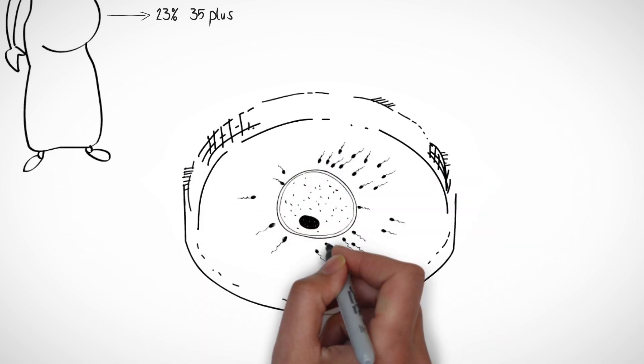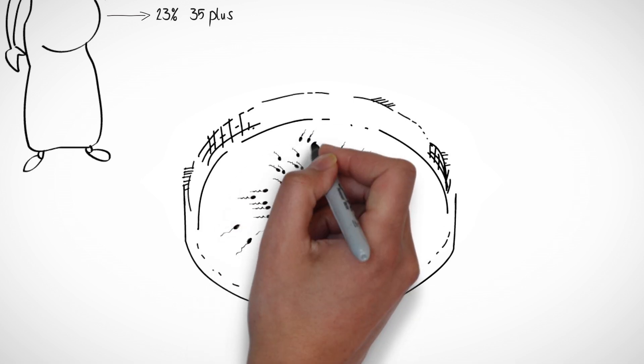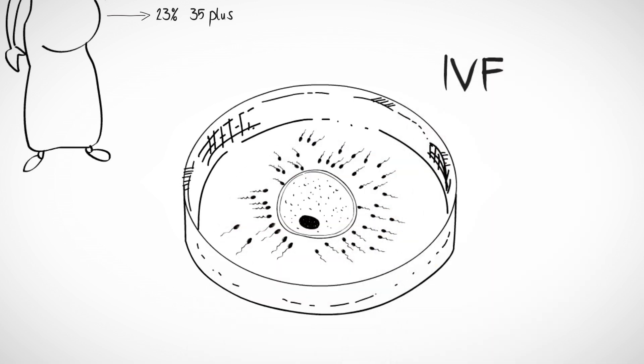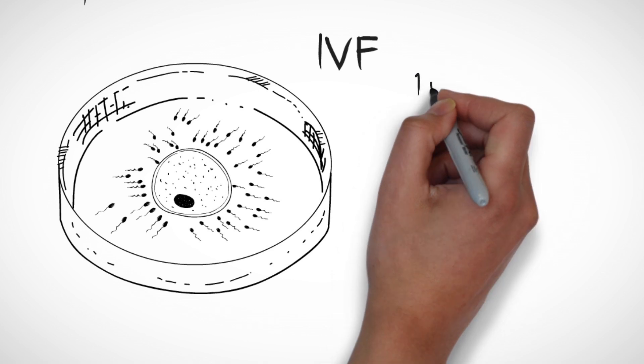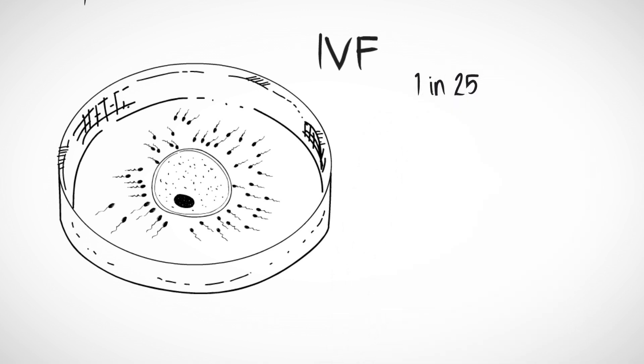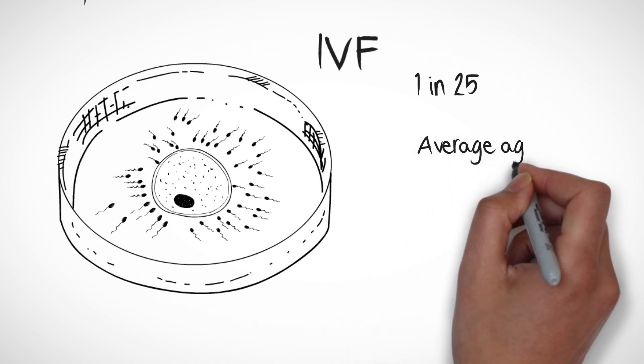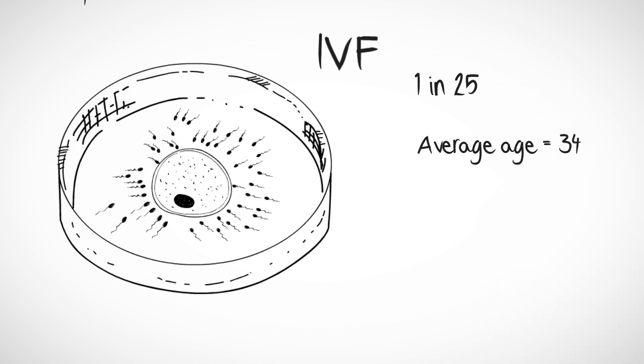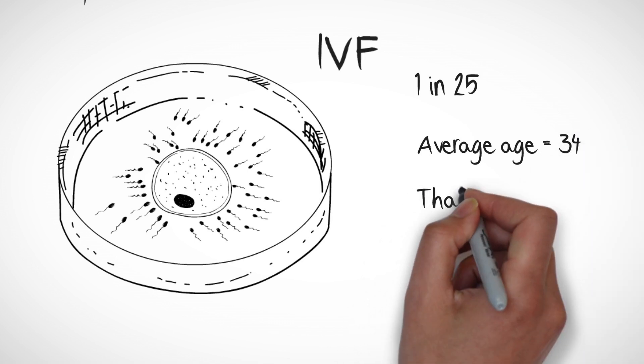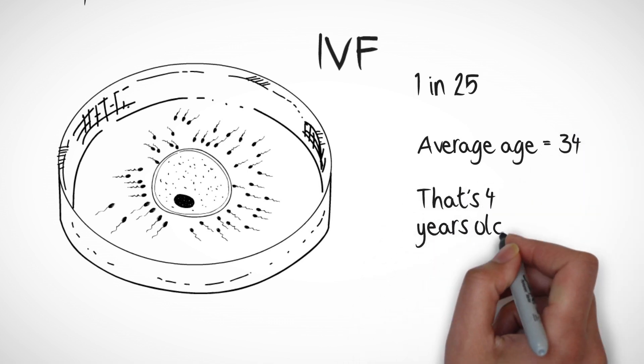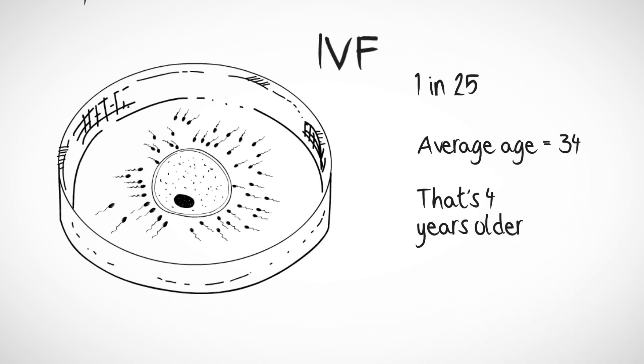For many fertility issues, including age-related issues, assisted reproductive technology like IVF can help. One in 25 births in Australia are now the result of IVF. The average age of a woman giving birth who had undergone IVF is 34, four years older than the average age of women who had unassisted pregnancies.